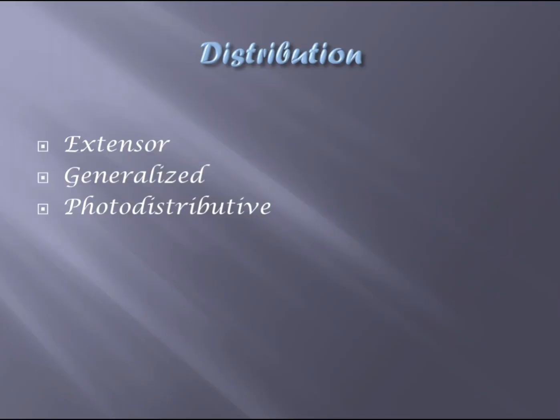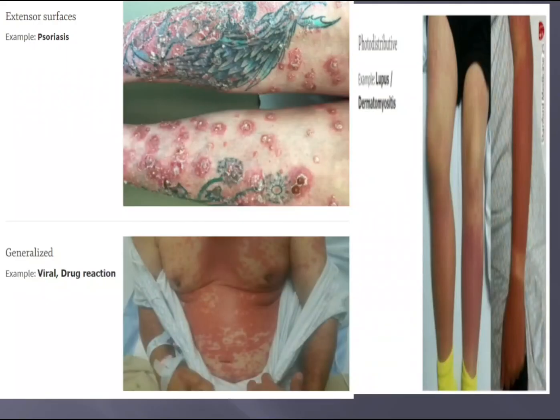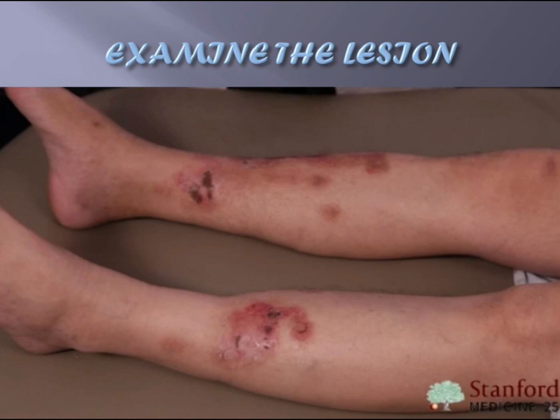You also need to note the distribution of the skin lesion. Is it on extensor surfaces? Is it generalized? Is it photodistributive — meaning in areas where there is more light exposure? Psoriasis is an example of extensor surface distribution. Generalized distribution may be due to viruses or drug reactions. Photodistributive examples include lupus and dermatomyositis, which affect sun-exposed areas.